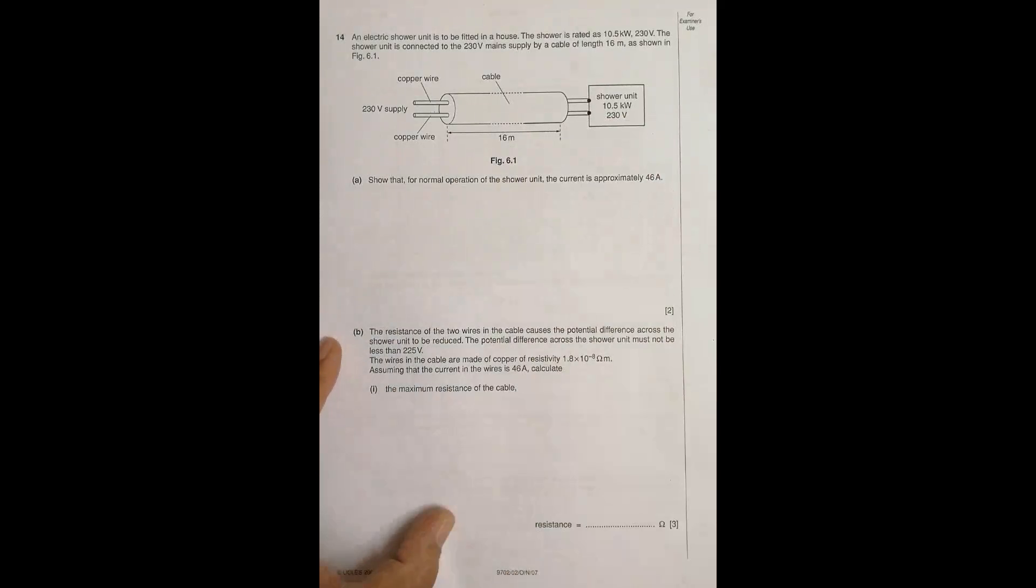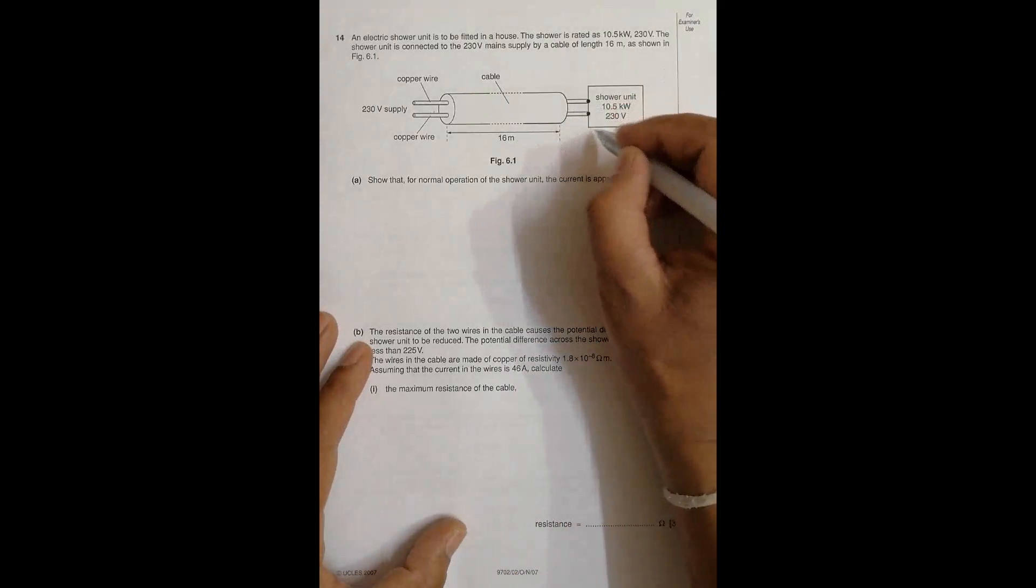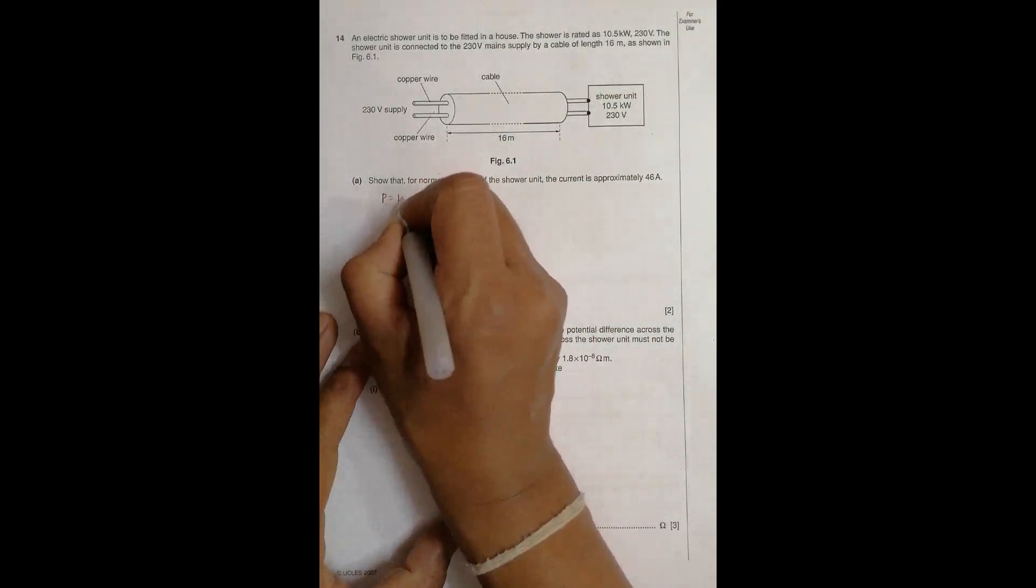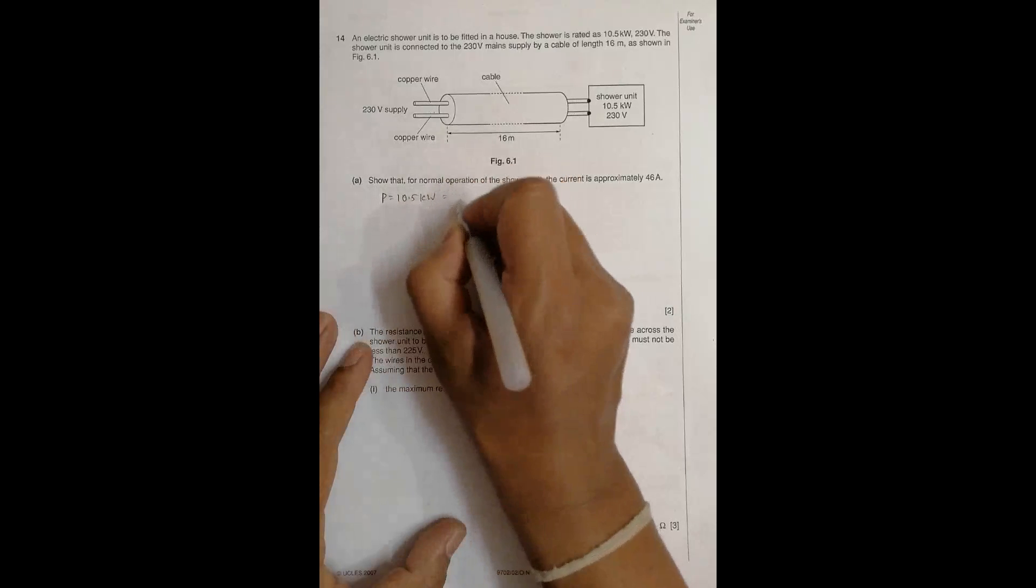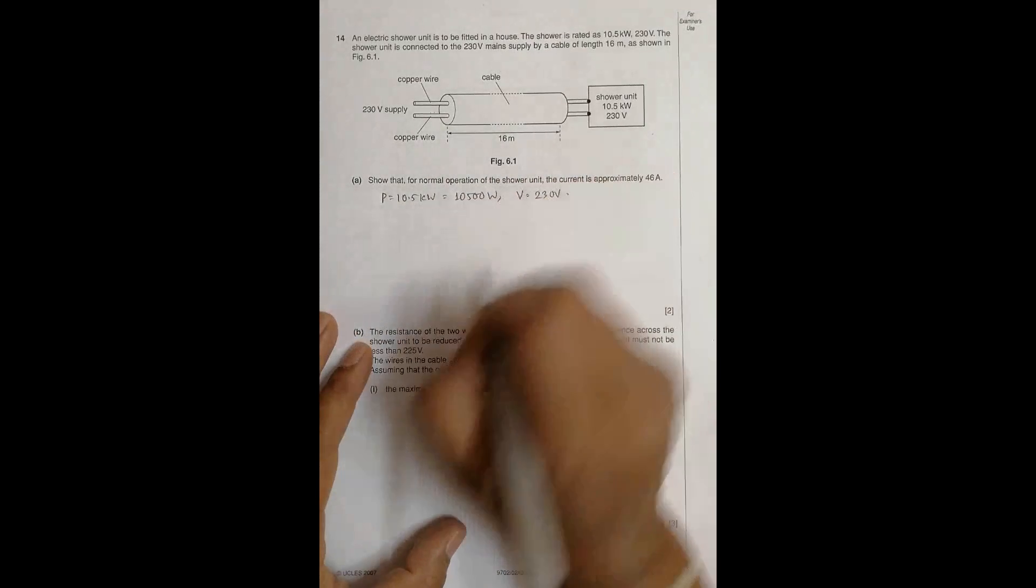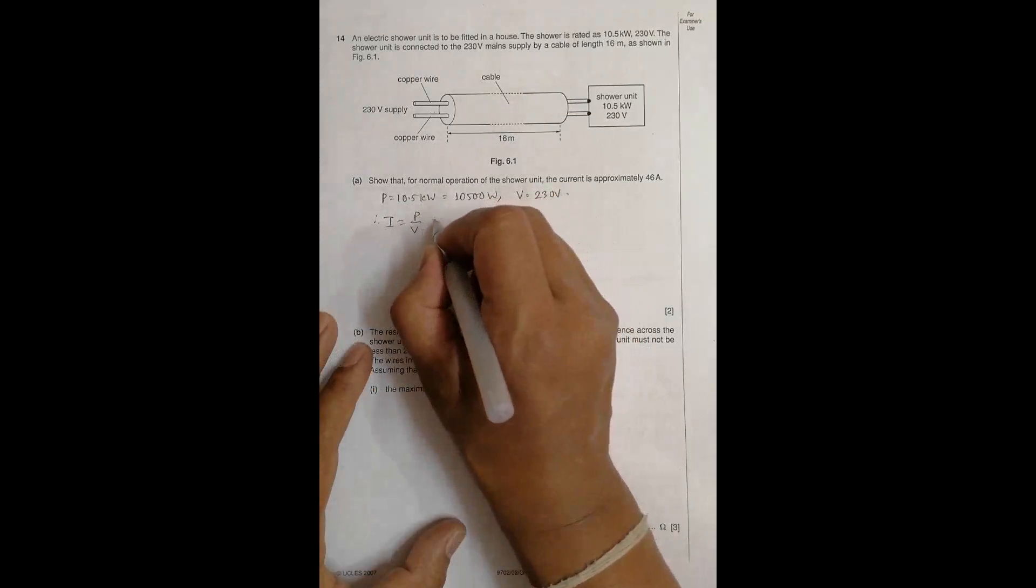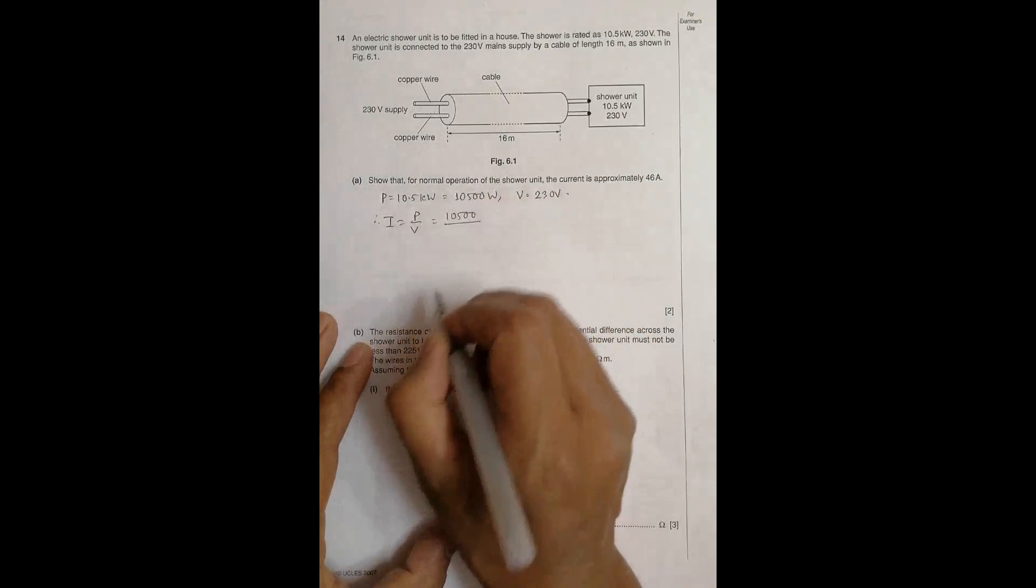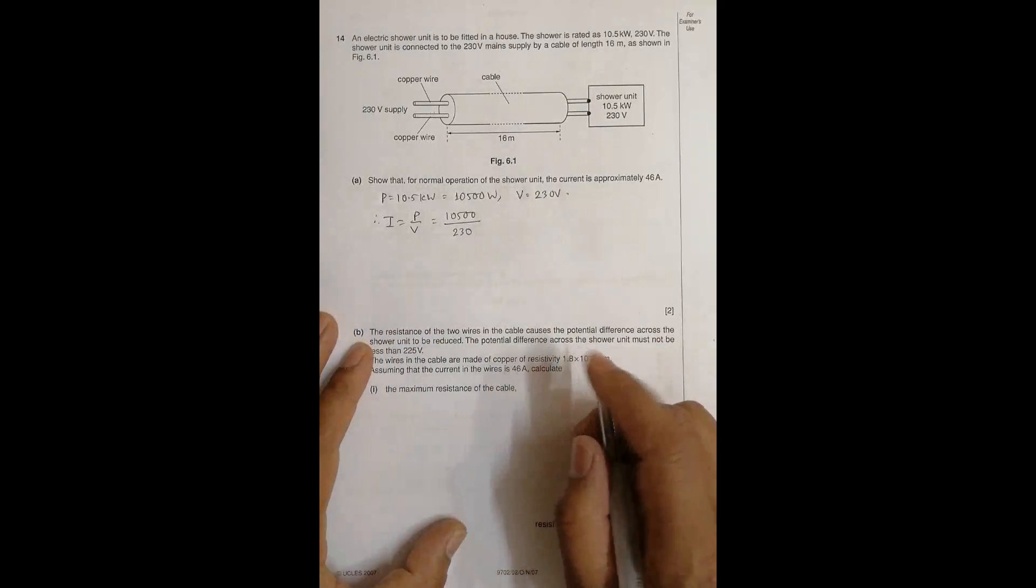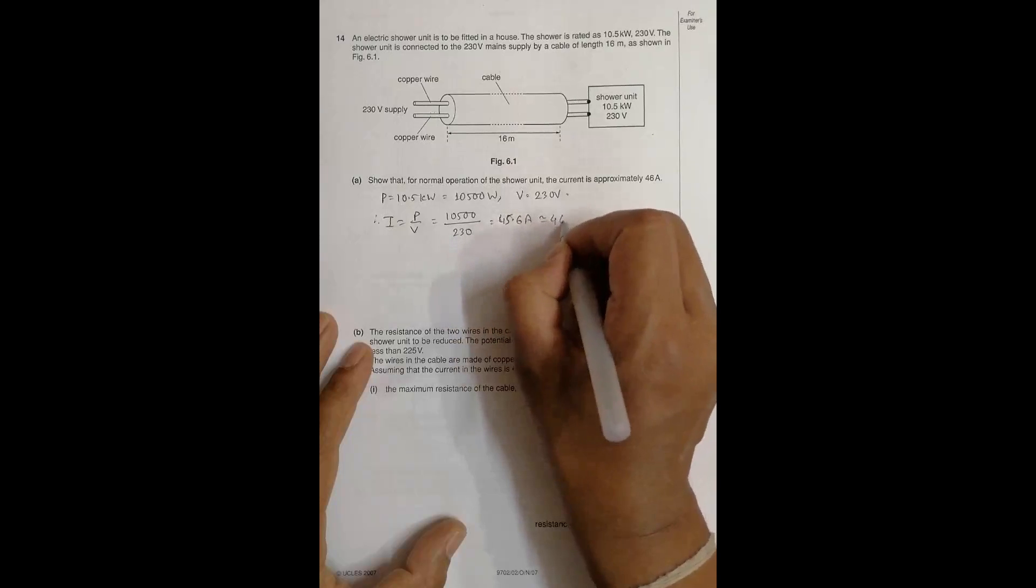The first question is show that for normal operation of the shower unit the current is approximately 46 ampere. We have power equal to 10.5 kilowatt which is 10,500 watt, and voltage equal to 230 volt. The current is given by power by V, so I equals 10,500 divided by 230, which comes to around 45.6 ampere, which becomes equal to 46 amperes.